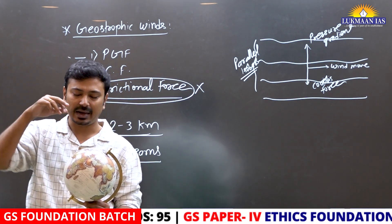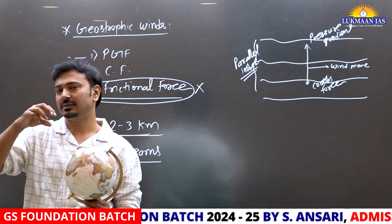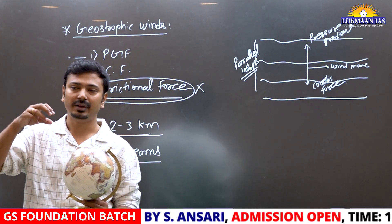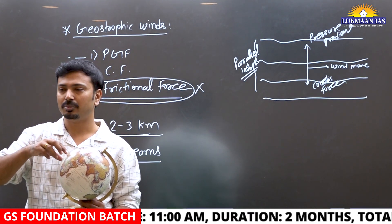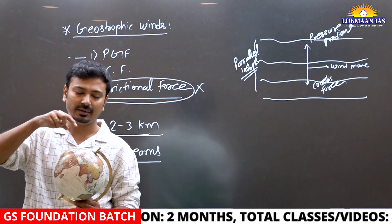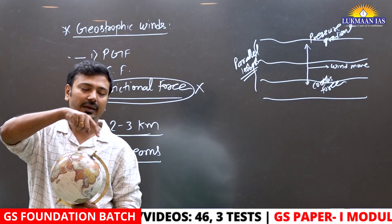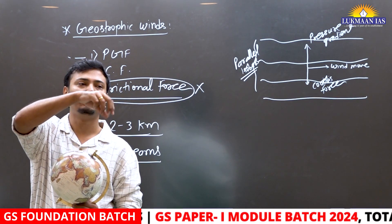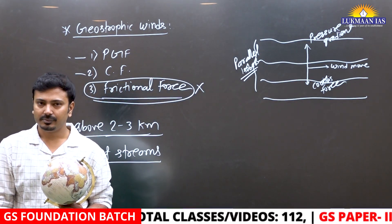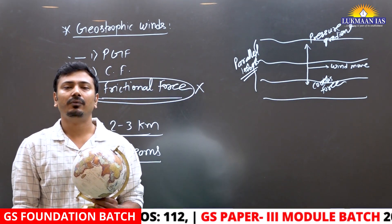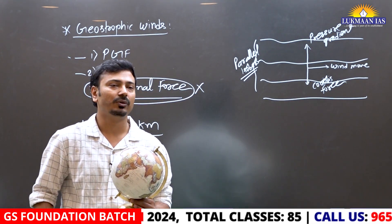At the equator, there is low pressure at the surface, so in the upper troposphere there will be high pressure. Similarly, above the poles where there is high pressure at the surface, in the upper atmosphere above the pole there will be low pressure. Wind around that low pressure will try to move in a cyclonic manner.